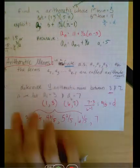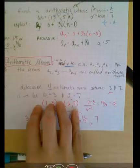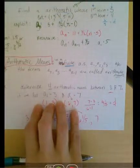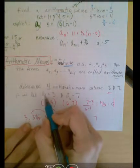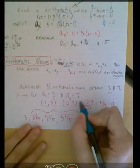and then I have 2, 3, 4, 5, 6 would be my seventh term. So that means that a sub 1 is equal to 3 and a sub 6 is equal to 7.